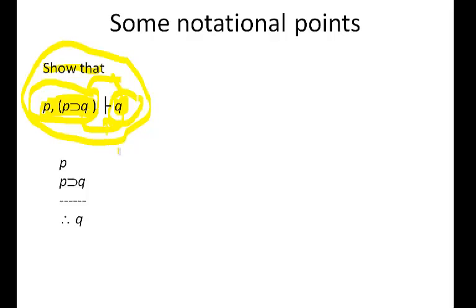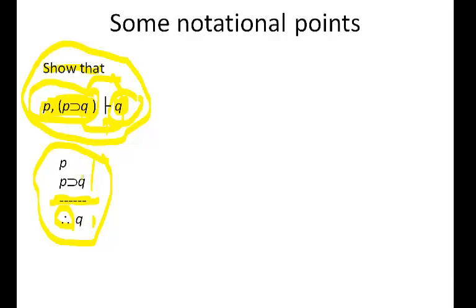Another way these things are sometimes presented looks something like this: you'll see a 'therefore' symbol and a line separating the premises from the conclusion. Q is the conclusion, and the two premises are P and if P then Q.